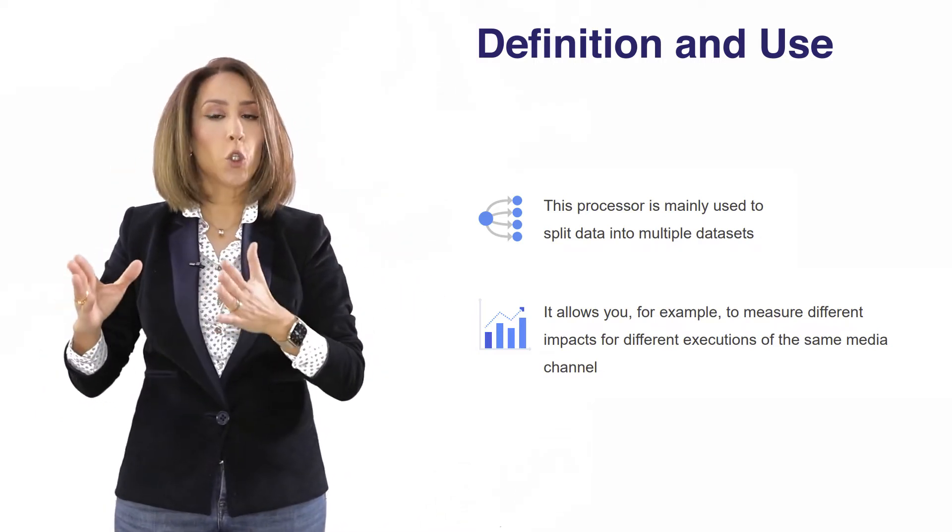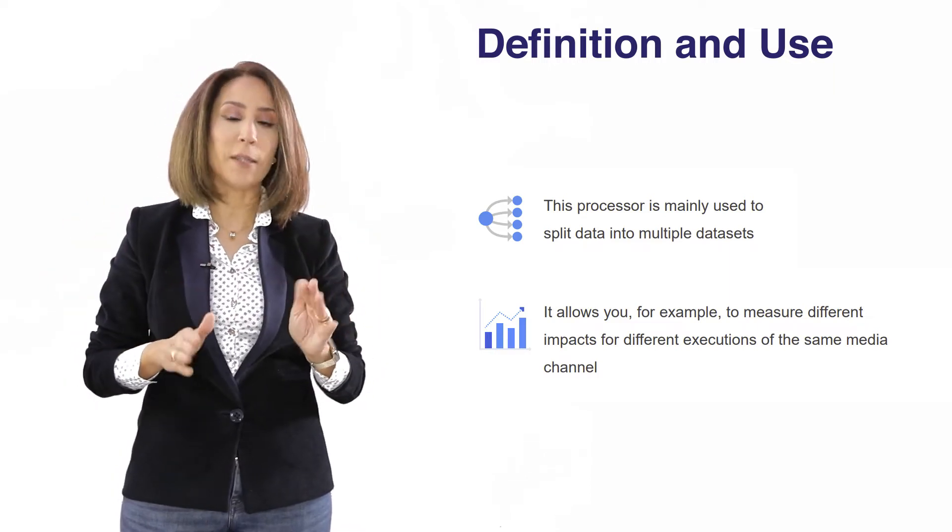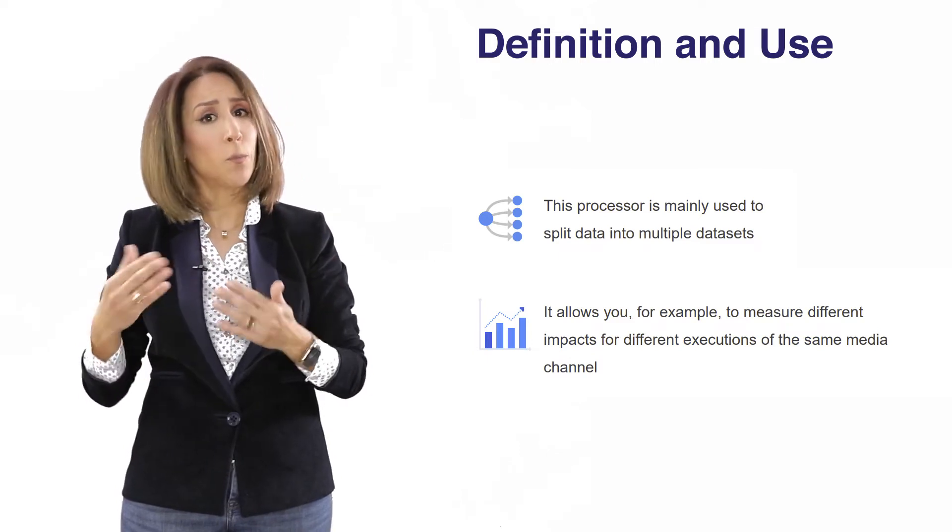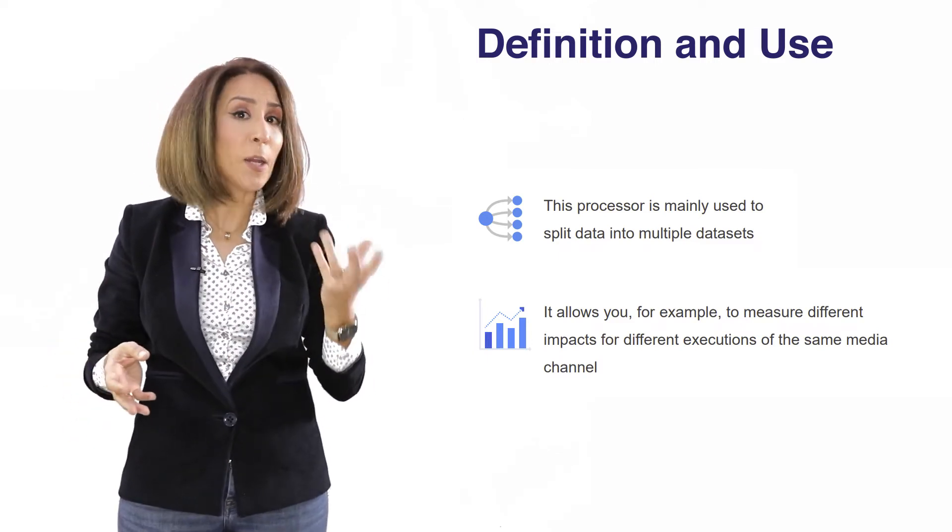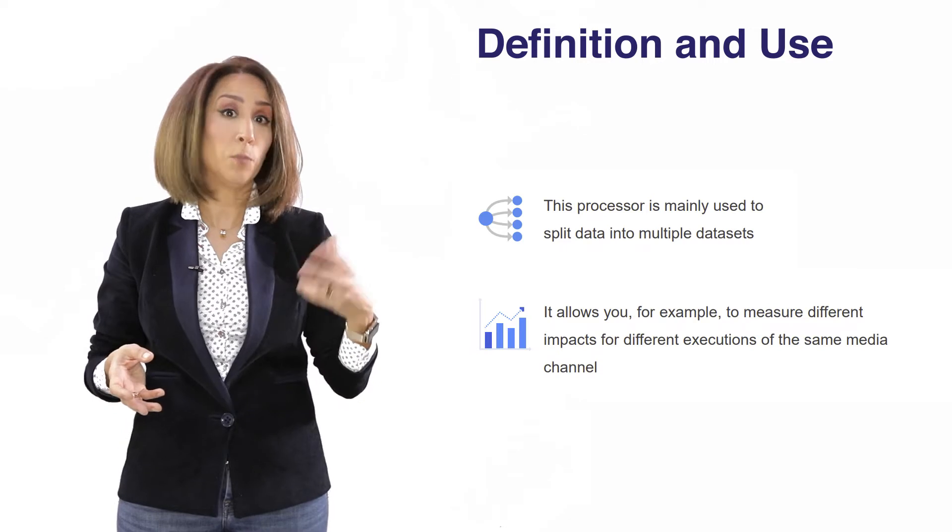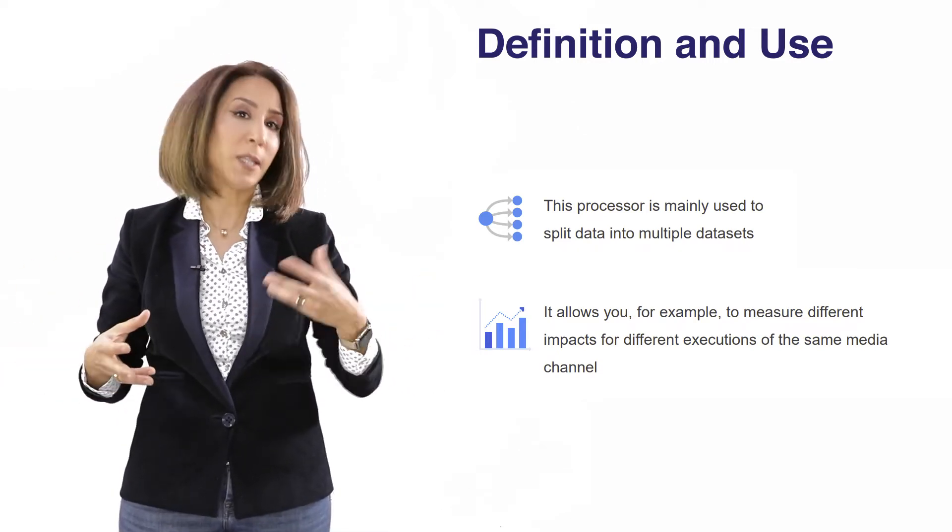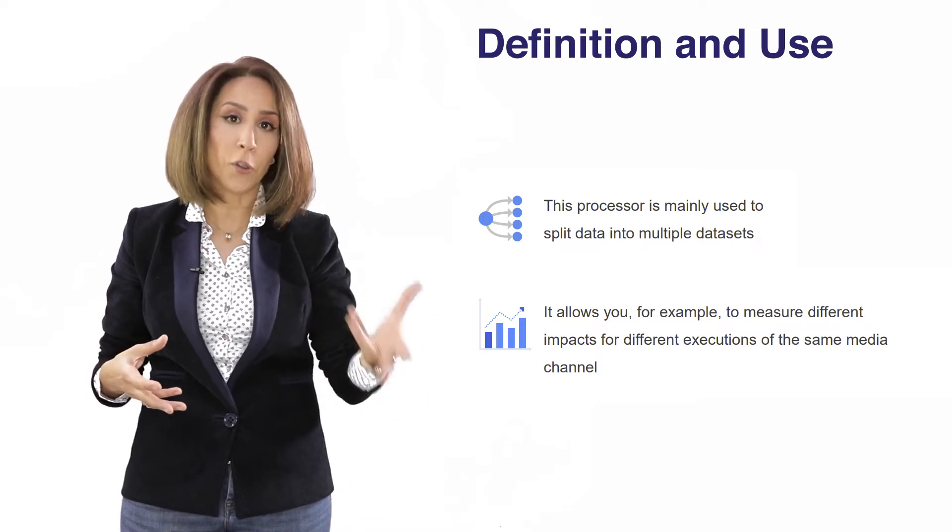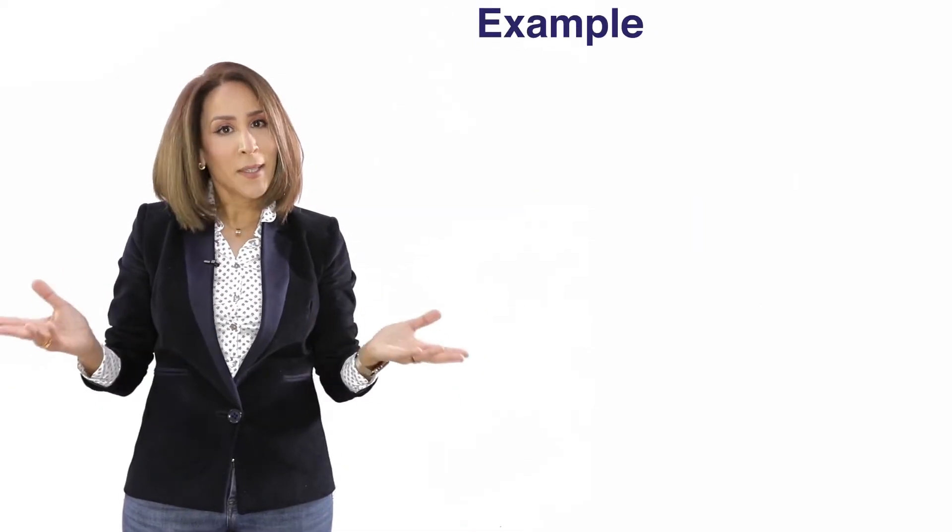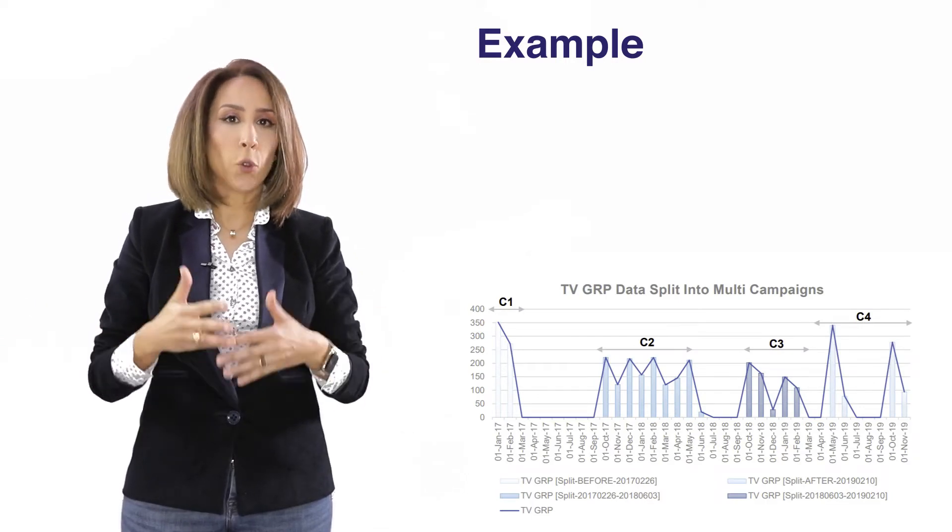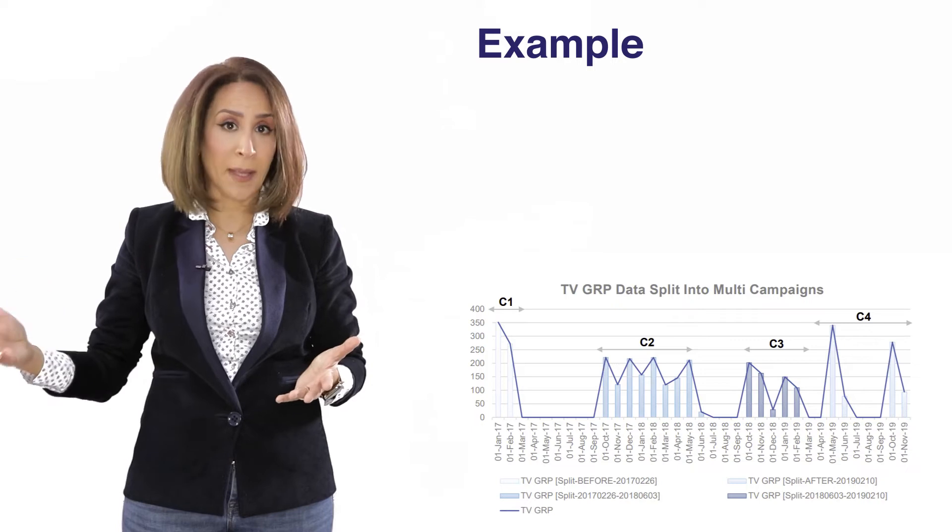So you could potentially use the splitter processor in order to split your total variables into separate campaigns. You can allocate different coefficients later on in the modeling stage for each campaign. So you can go back to your client and say that campaign one was much more effective than campaign two or campaign three because it had a bigger coefficient on your equation than the other campaigns. This is an illustration of the splitter processor when we apply it to a total variable in order to create different campaigns.